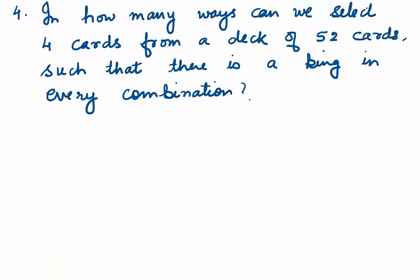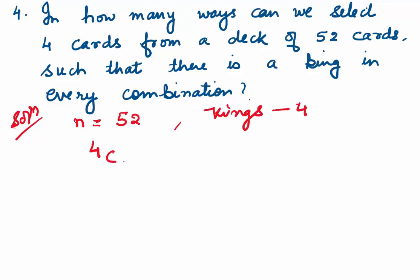Question 4: in how many ways can we select 4 cards from 52 such that every combination has at least one king? There are 4 kings, so first select 1 king: 4C1. The 4 kings are now excluded, leaving 48 cards, from which we select the remaining 3: 48C3. Since 'and' connects them, we multiply: 4C1 times 48C3. Simplifying gives 69,184.